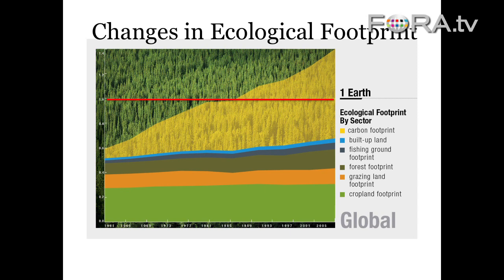Forest footprint is material goods from forest lands — it's not carbon sequestration. The fishing area, when you get into the numbers, actually has increased almost proportionally. Built-up land is a very small proportion when you look at mankind's overall footprint on the earth.